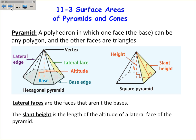A pyramid is a polyhedron, which is a three-dimensional solid where each of the faces are polygons. A pyramid is a type of polyhedron where you have one face, which is called the base. It can be any polygon, and the other faces are all triangles, usually isosceles triangles.